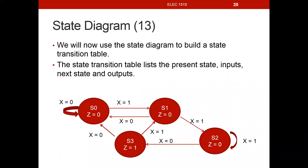We just completed our state diagram for the sequence detector 1, 1, 0. Remember, in the previous lecture, we said this was a Moore state machine. The Moore state machine is characterized by showing the outputs in each of the states. We determine what the output is, z equals 0, in each of the present states. We only said z is equal to 1 when we have detected the full sequence 1, 1, 0, so z becomes 1. For Moore machines, the outputs are only functions of the present state.